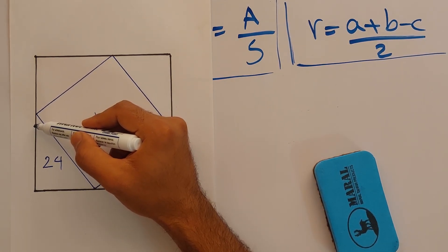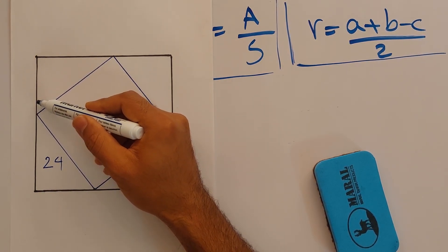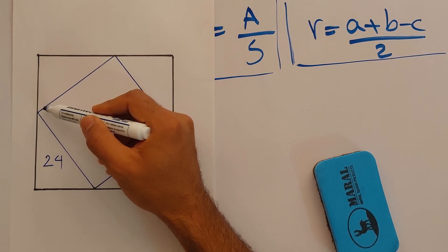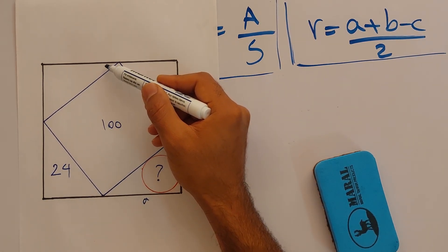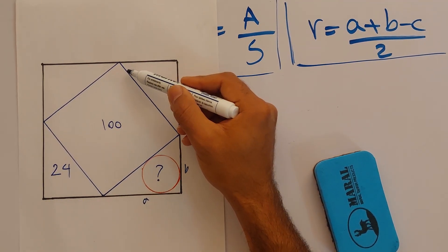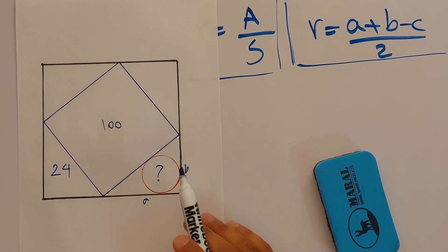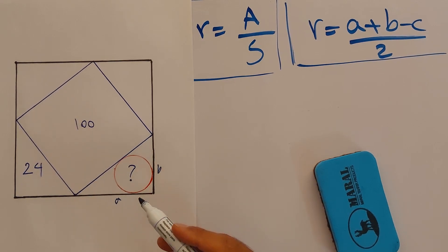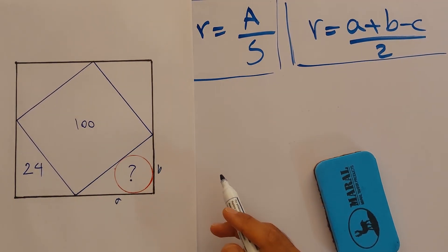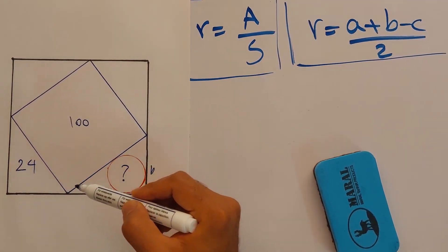Continuing the angle-chasing: if this is beta, then by the same logic this is alpha, then beta, then alpha, then beta. We can conclude that all four triangles are not only similar but congruent — they share the same hypotenuse, and we can confirm this by angle-angle-side or angle-side-angle. This means all four triangles each have an area of 24 square units.